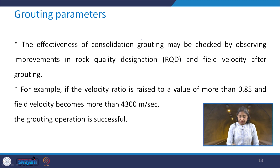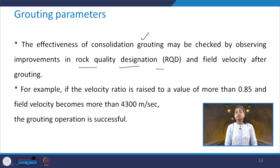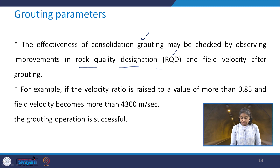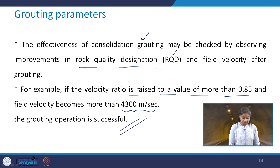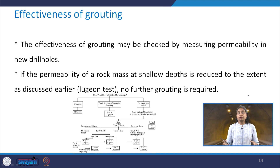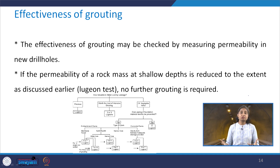The effectiveness of consolidation grouting may be checked by observing improvements in the rock quality designation (RQD) and the field velocity after grouting. For example, if the velocity ratio is raised to a value more than 0.85 and the field velocity becomes more than 4300 meters per second, we can say that the grouting operation is successful. The effectiveness of grouting must be checked because this is kind of a blind process — we cannot really see what we are doing.